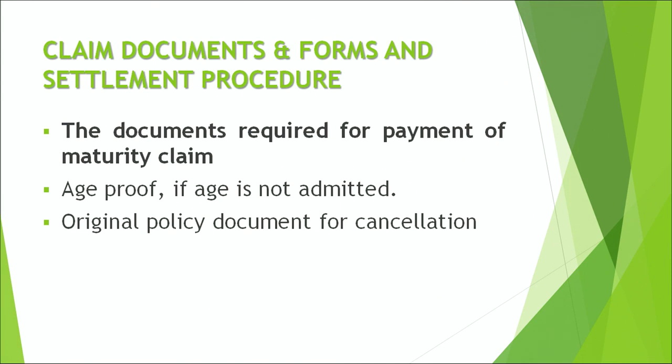Now let us understand the claim documents, forms, and settlement procedure involved in processing these claims. The documents required for payment of a maturity claim are as follows. First is age proof, if age is not already admitted. This can be standard or non-standard age proofs. Standard age proofs — accepted in the normal course — include passport, driving license, ID card of defense personnel, school leaving certificate, etc. Non-standard age proofs include self-declaration, horoscope, ration card, etc.